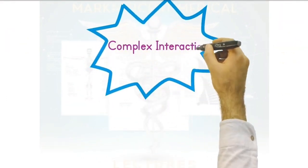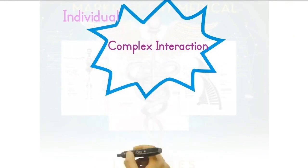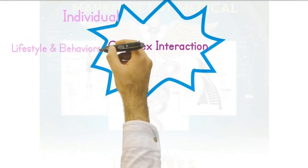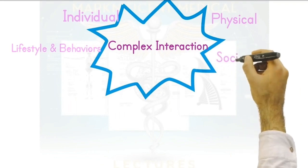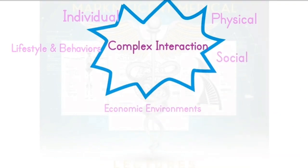As you can see from this example, health is determined by a complex interaction between many different factors, or determinants of health. These include individual characteristics, lifestyle and behaviors, and also the physical, social, and economic environments — the social determinants of health.